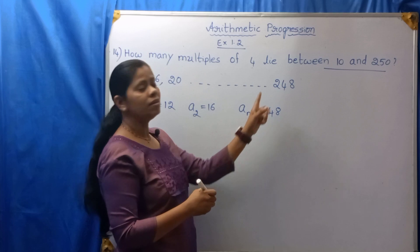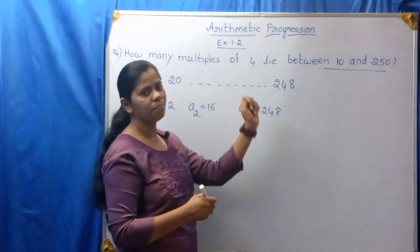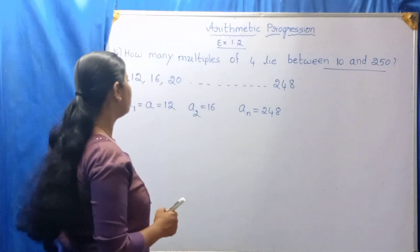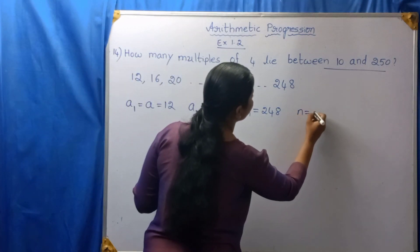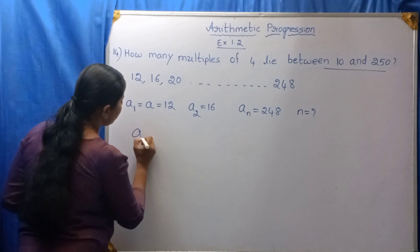Aₙ is nothing but the last term of an AP, right? Then, what we have to find out? We have to find out n. Now, let us apply the formula.